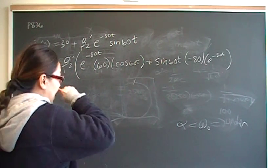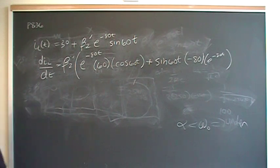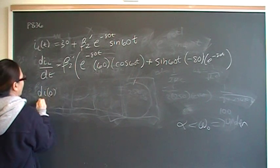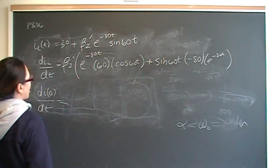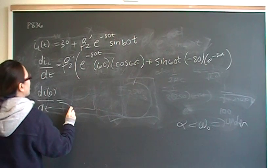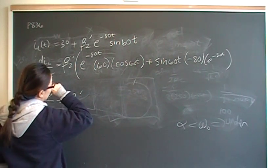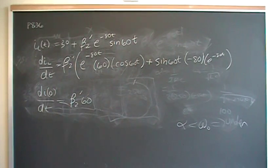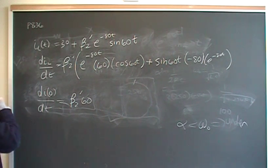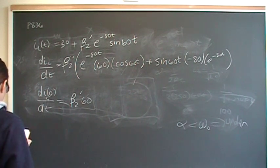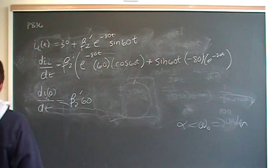Now I'm going to use the same trick that I used before. This is just a function, and I can evaluate this function at any number I want. I'm going to simplify this and evaluate it at zero. Very conveniently for me, the cosine is going to be one, and sine goes away. I'm left with beta 2 prime equals 60 beta 2 prime is equal to whatever the value of di L dt is at zero.